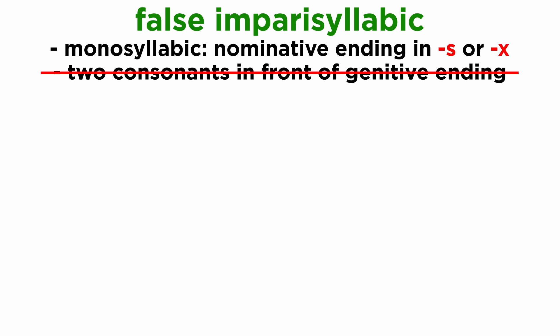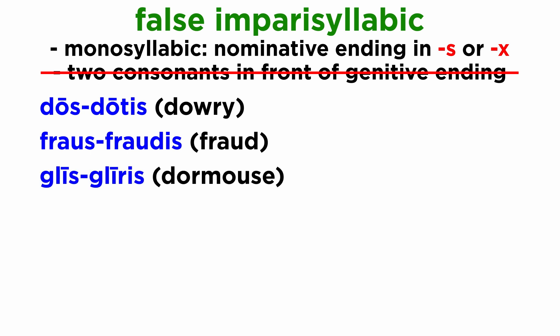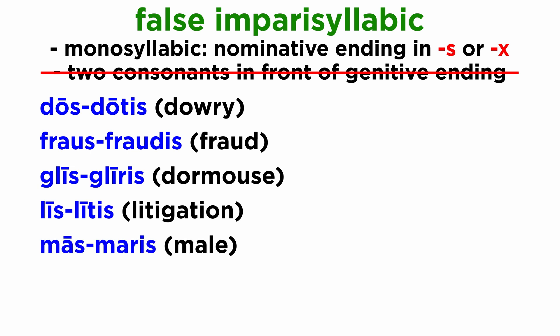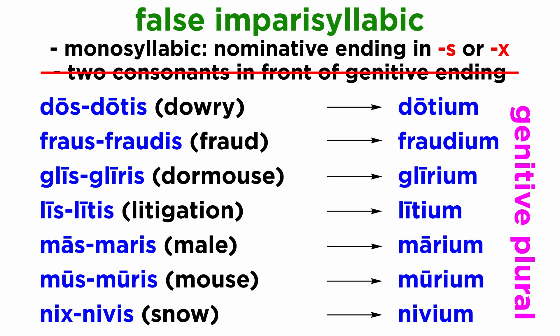Then there are more monosyllabic words, but which do not have two consonants in front of the genitive singular ending: dos dotis, fraus fraudis, glis gliris, lis litis, mas maris, mus muris, nix nivis. Their genitive plural forms will be murium, nivium, and so forth.